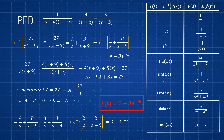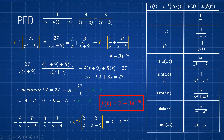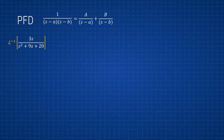As a rule of thumb: when using PFD, your numerator should be a power less than your denominator. For example, if the highest power in the denominator is s, then the numerator is a constant — giving us A and B. If the denominator has s², then the numerator form would be Bs + A. If s³, then As² + Bs + C, and so on.